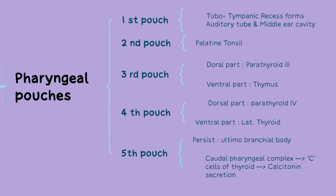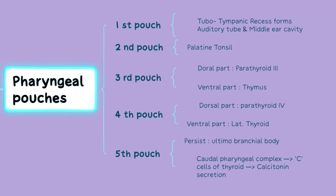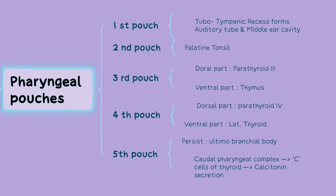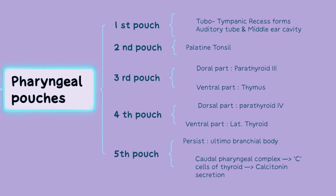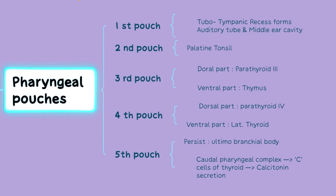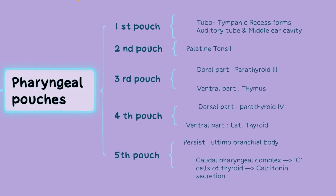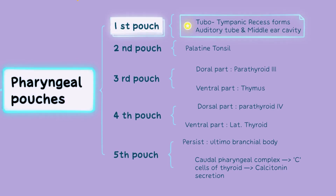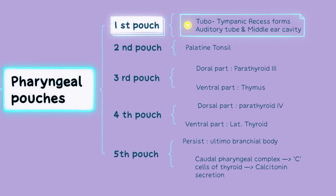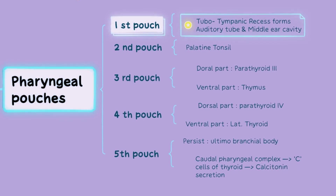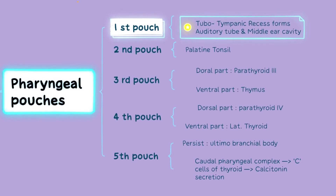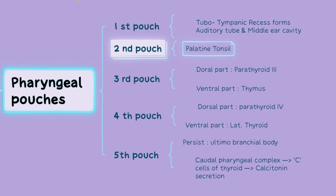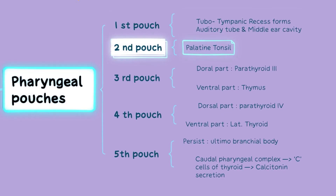Next, pharyngeal pouches are invaginations of the endodermal lining of the primitive pharynx that contribute to the development of various structures in the head and neck region. Different structures are derived from each pouch. The first pharyngeal pouch forms the tubotympanic recess, which gives rise to the auditory tube and the middle ear cavity. The second pharyngeal pouch gives rise to the palatine tonsil.